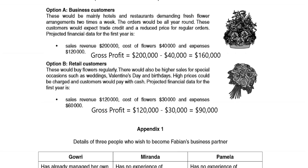With option B, the sales revenue is considerably lower at $120,000. However, the cost of the flowers is also lower at $30,000, and therefore the gross profit is $90,000, which is considerably lower than option A.